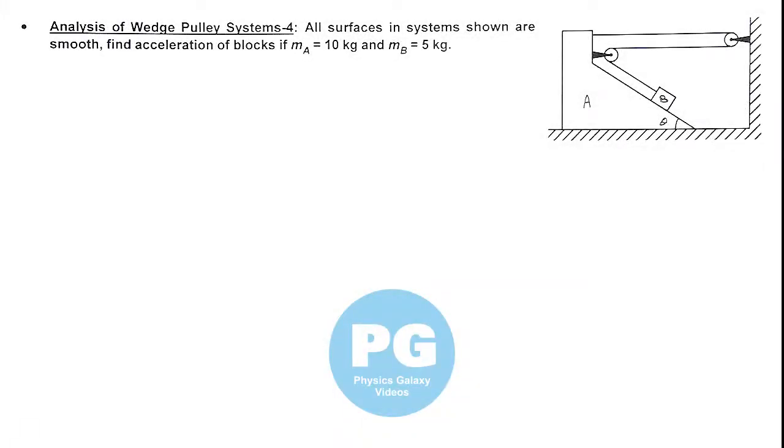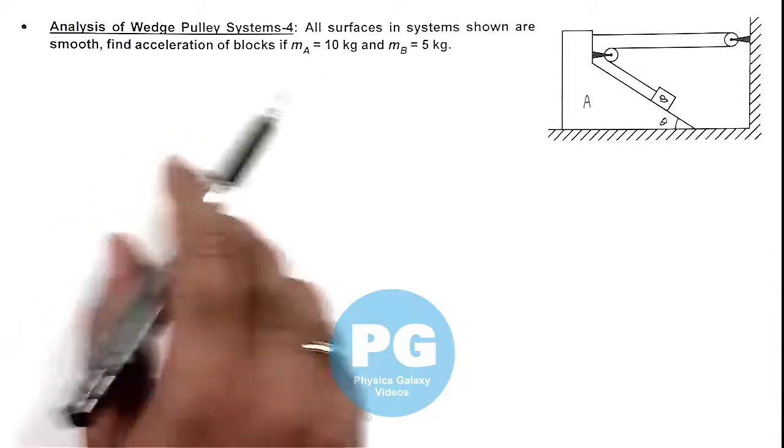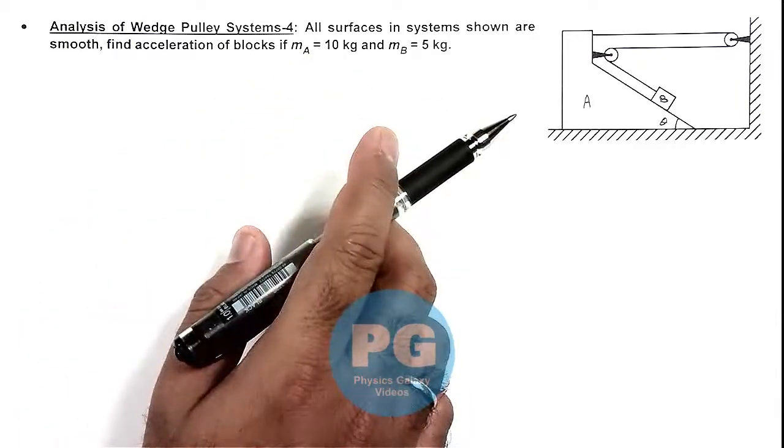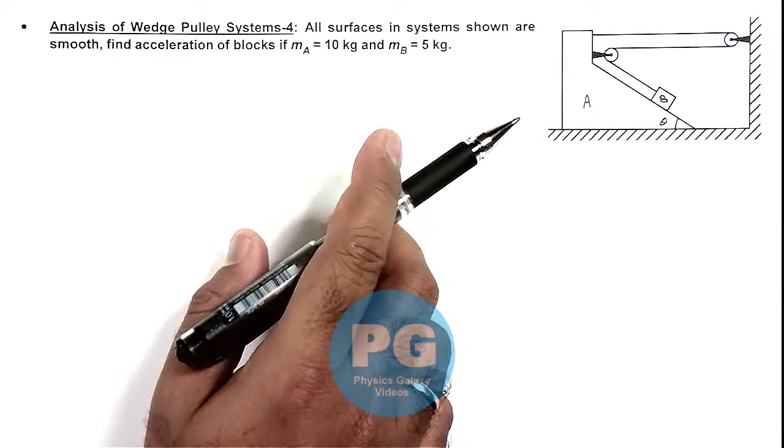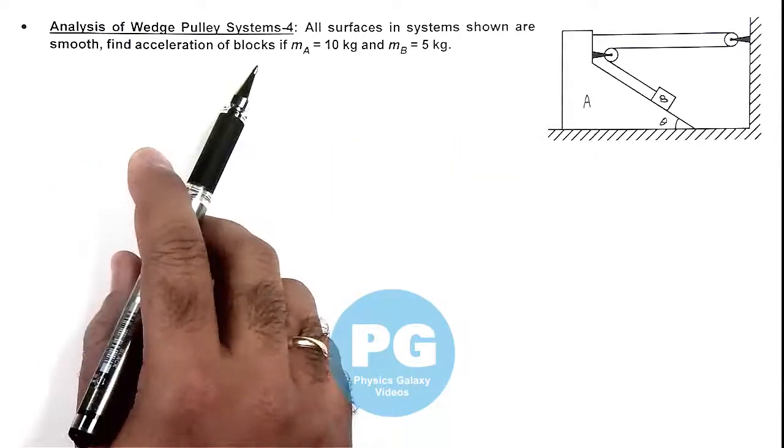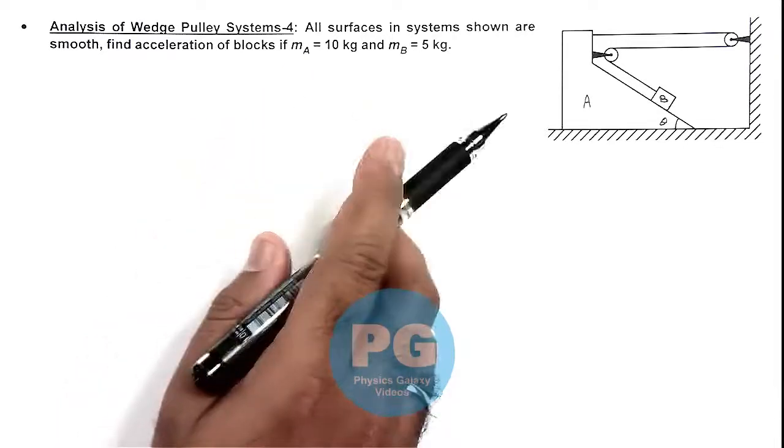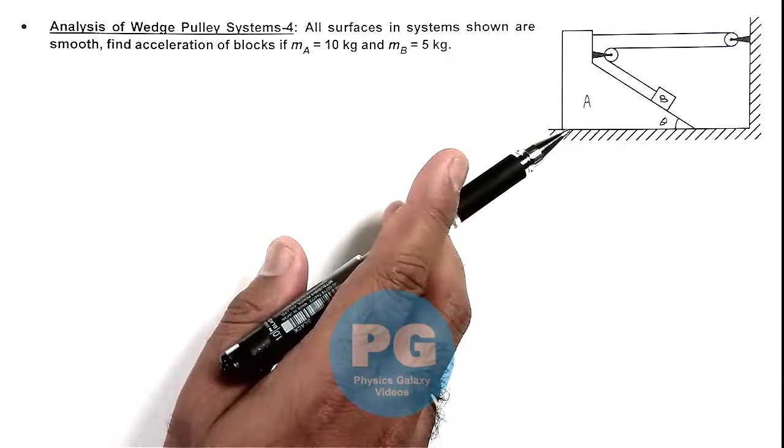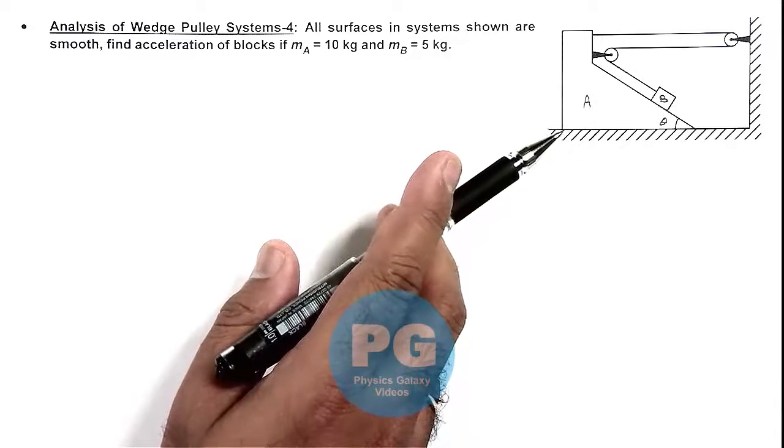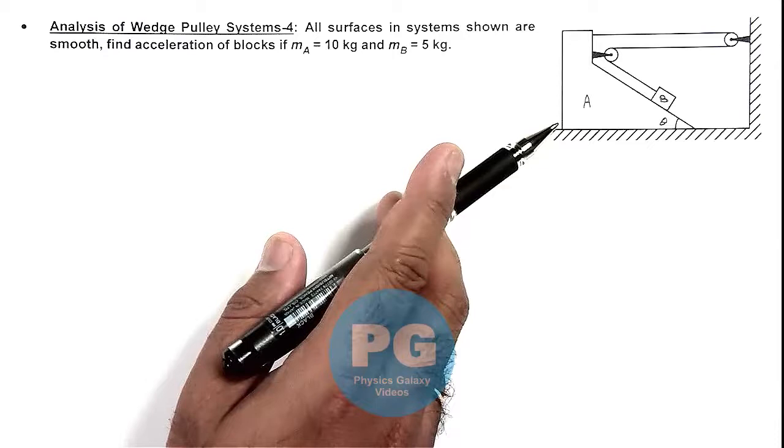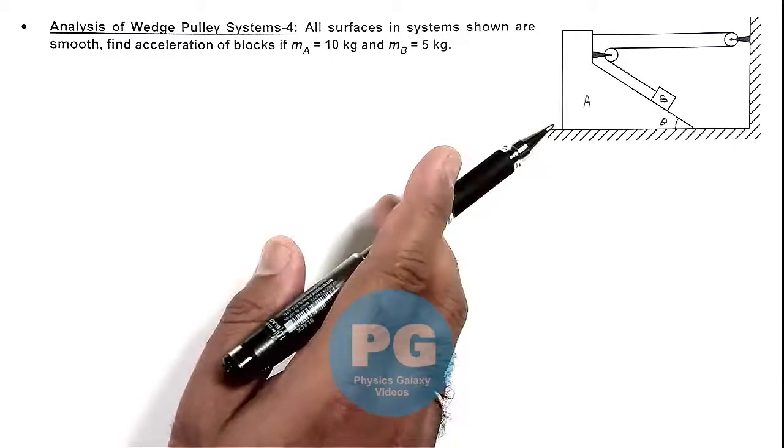Here is another wedge pulley system we are going to analyze. Here again we are given that all surfaces in the system shown are smooth. We are required to find the acceleration of these blocks if block A is of mass 10 kg and B is of mass 5 kg, which is resting on the inclined surface of A when the system is released.